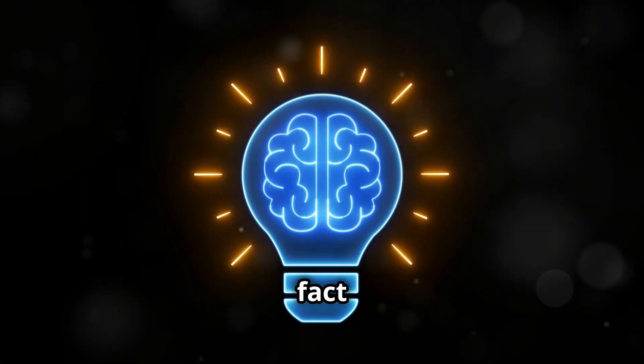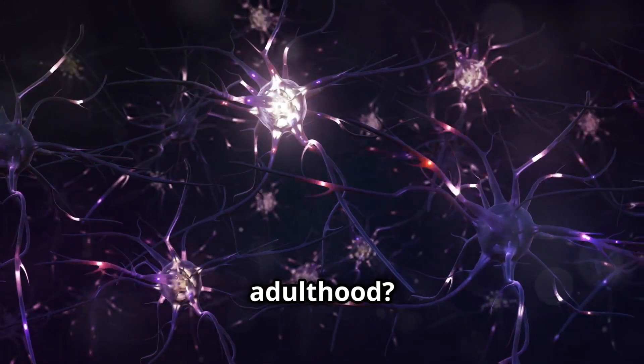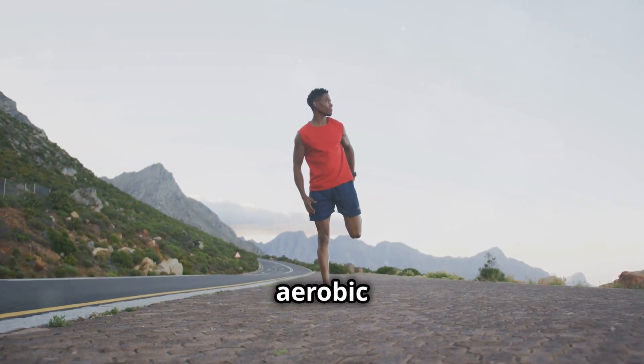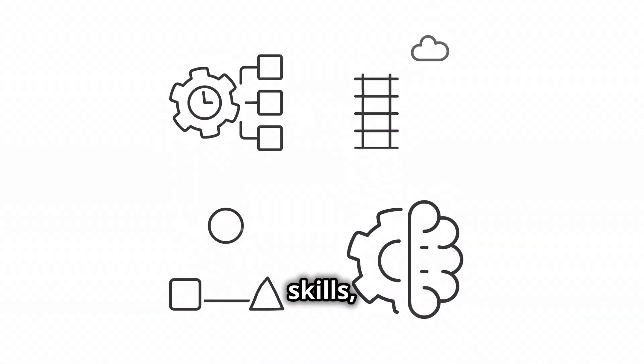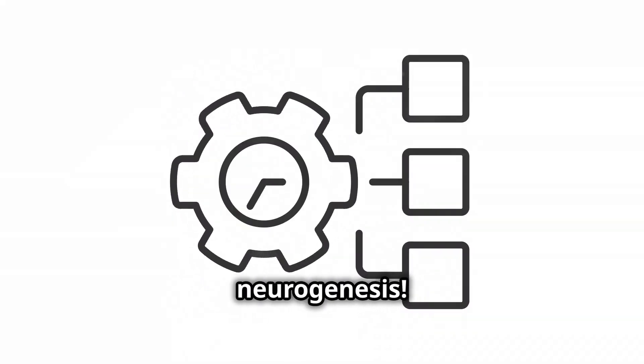Here's that fascinating fact we promised. Did you know your brain can generate new neurons well into adulthood? This is possible through a process called neurogenesis. But here's the fun part. Physical activities, aerobic exercise, and learning new skills, like the ones we cover in other videos, can significantly boost neurogenesis.